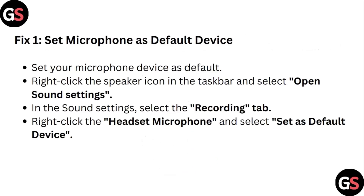Step 1: Set Microphone as Default Device. Set your microphone device as default. Right-click the speaker icon in the taskbar and select Open Sound Settings. In the Sound Settings, select the Recording tab. Right-click the Headset Microphone and select Set as Default Device.